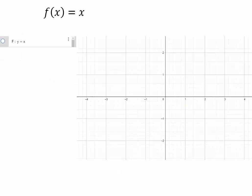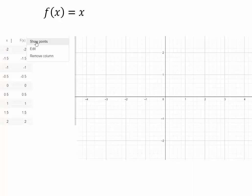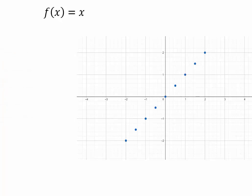Let's explore further. We already saw that y = x is a line. Plotting those coordinate points and connecting them gives a straight line. The inverse of y = x is found by interchanging x and y, giving x = y — so the function didn't change. Therefore y = x is its own inverse, and this function is called the identity function.